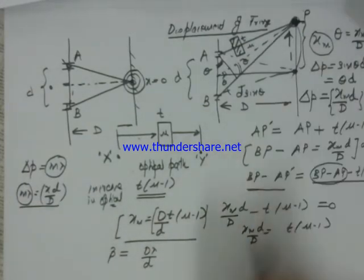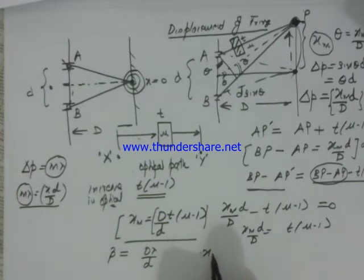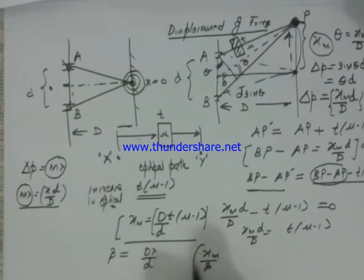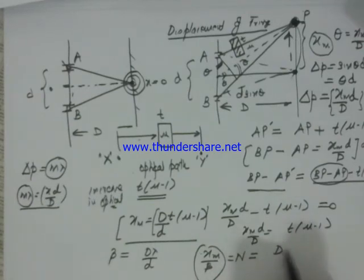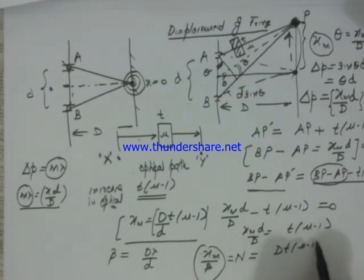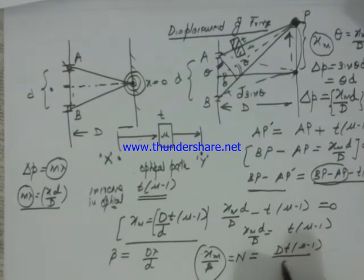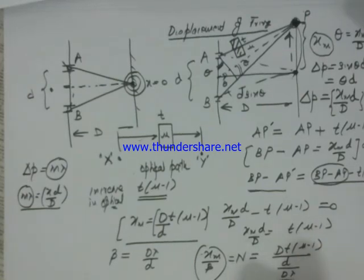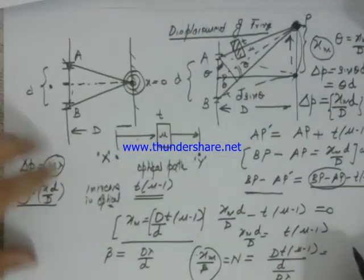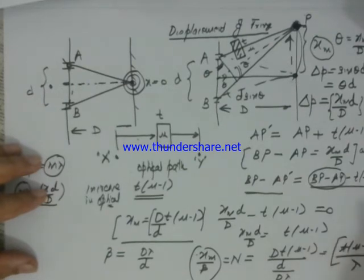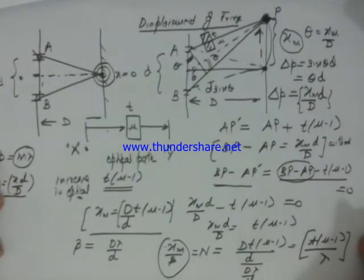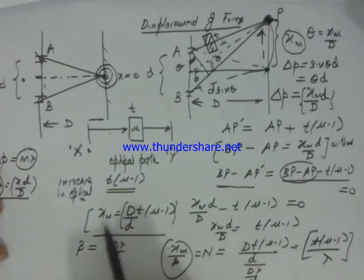How many fringes have shifted? Fringe width is lambda upon d, so divide this shift, the total shift, upon beta, which gives you the number of fringes shifted. So it becomes Dt mu minus 1 upon d divided by d lambda upon d, so it comes as t times mu minus 1 upon lambda.